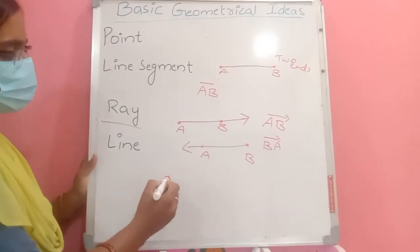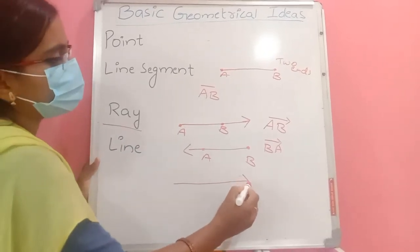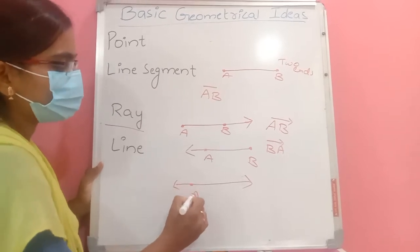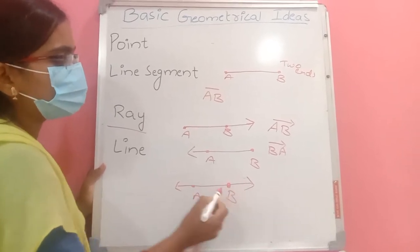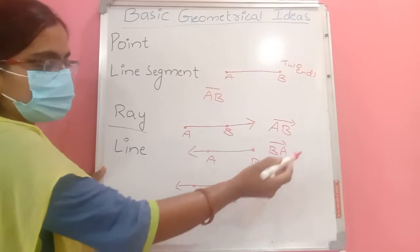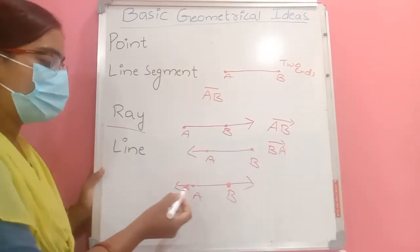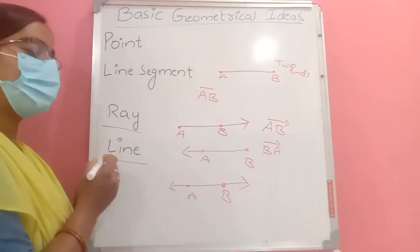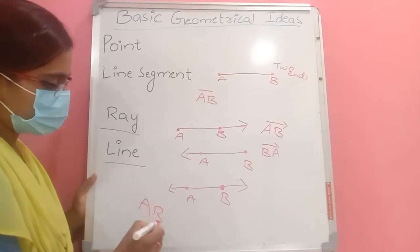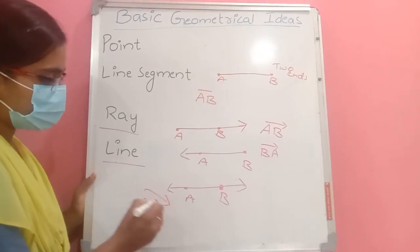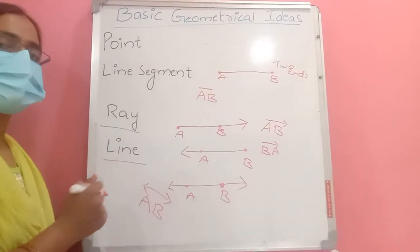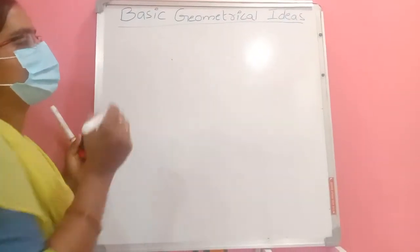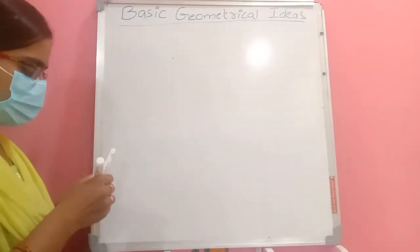A line is when a line segment is endless on both sides. If it prolongs on the B side and also prolongs on the A side, then we call this a line. A line is shown with a line symbol over AB.